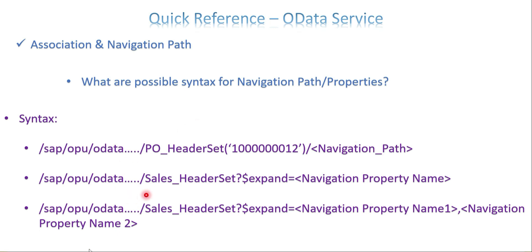Here are the possible syntax options for navigation property. The first is for a normal association call based on a specific navigation path. The second and third involve the additional field dollar-expand — these belong to the deep entity concept. If you have a single navigation property, you say expand equals that property; if multiple, you use comma-separated navigation property names. The normal association call just mentions the navigation path for whichever association you want to call.